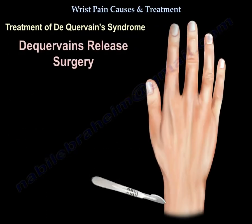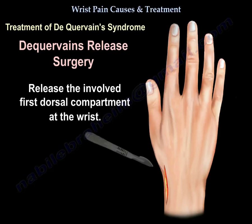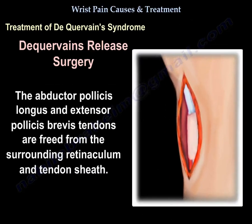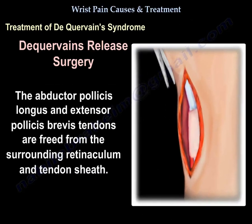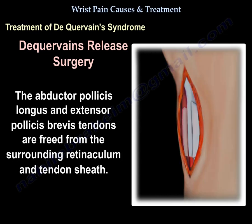De Quervain release surgery involves releasing the first dorsal compartment at the wrist. The abductor pollicis longus and extensor pollicis brevis tendons are freed from the surrounding retinaculum and tendon sheath.